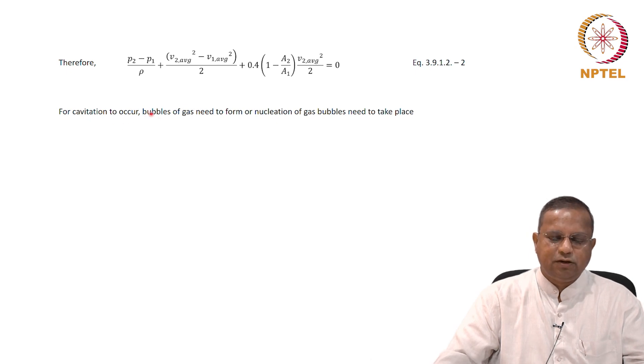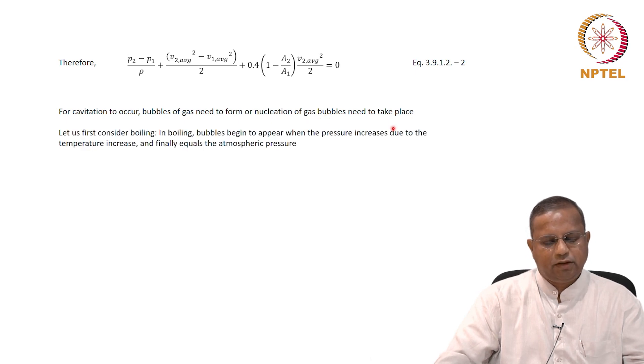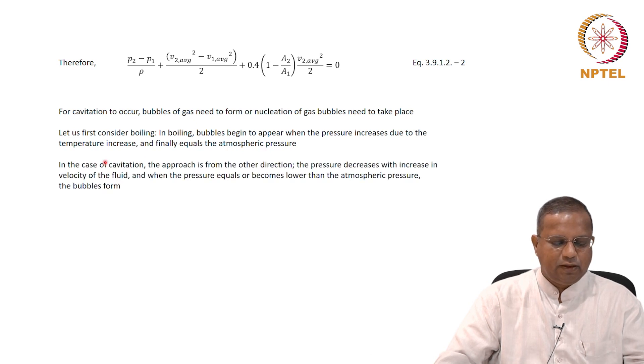Therefore, p2 minus p1 by rho plus v2 average squared minus v1 average squared by 2 plus 0.4 into 1 minus a2 by a1, v2 average squared by 2 equals 0, by substituting the various terms into the engineering Bernoulli equation. These two were already there, we just substituted this for the friction loss term, 3.9.1.2-2. For cavitation to occur, bubbles of gas need to form or nucleation of gas bubbles need to take place. I am going to explain the same thing again that I told you earlier so that you understand it better.